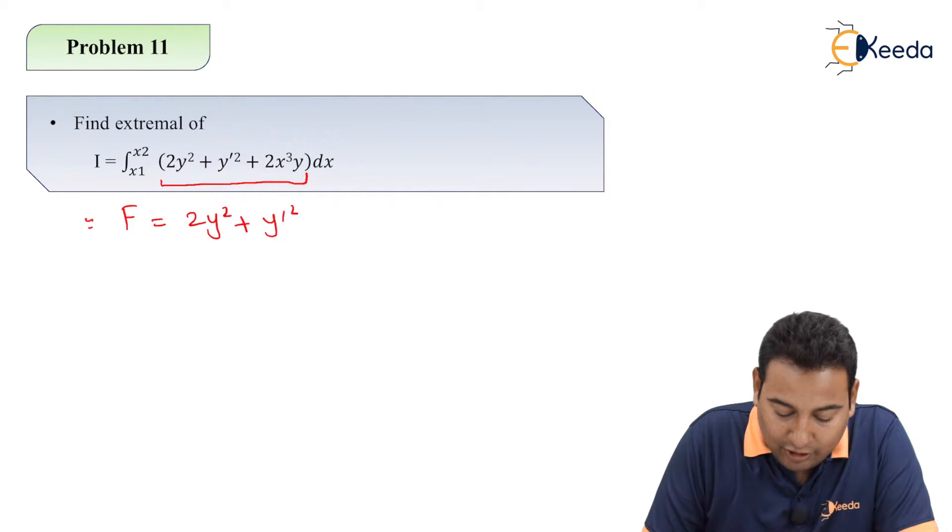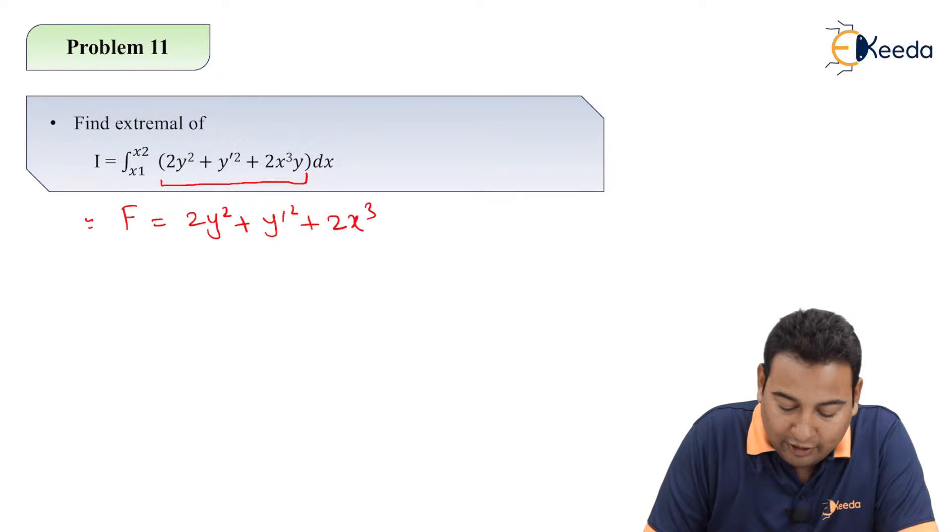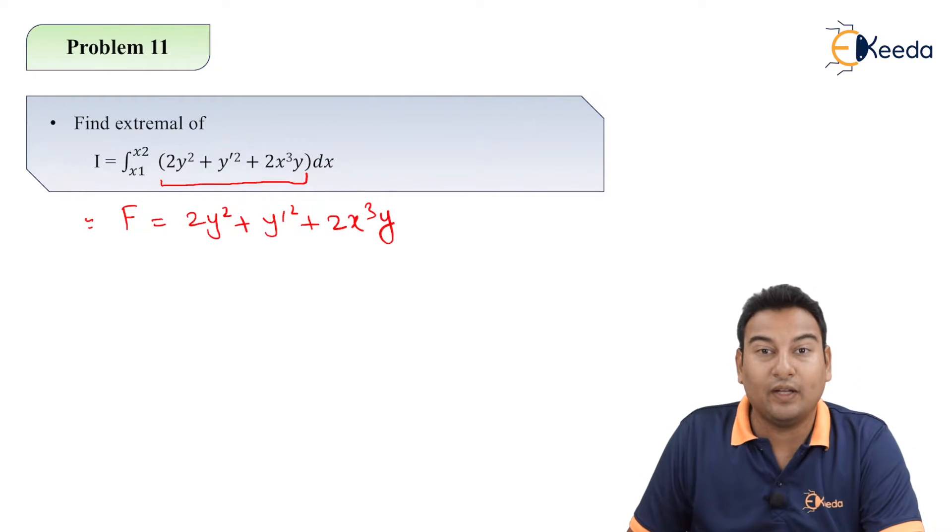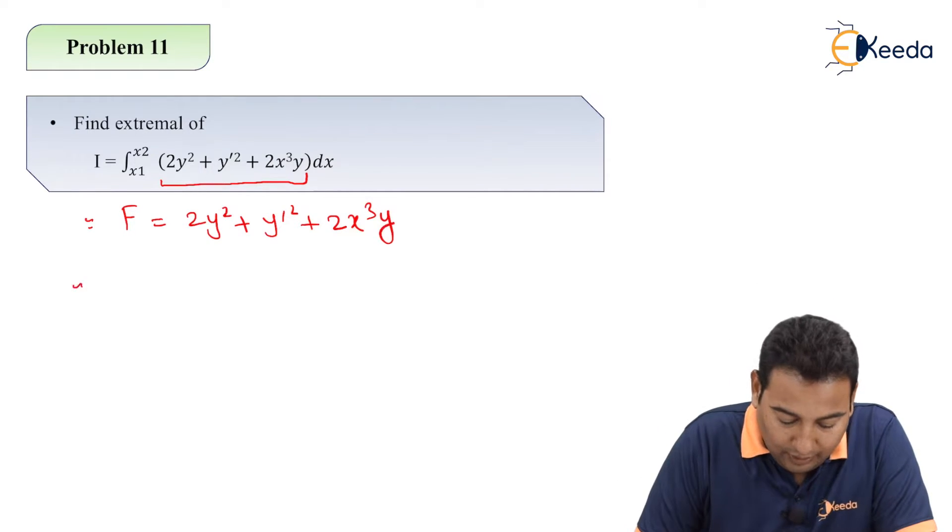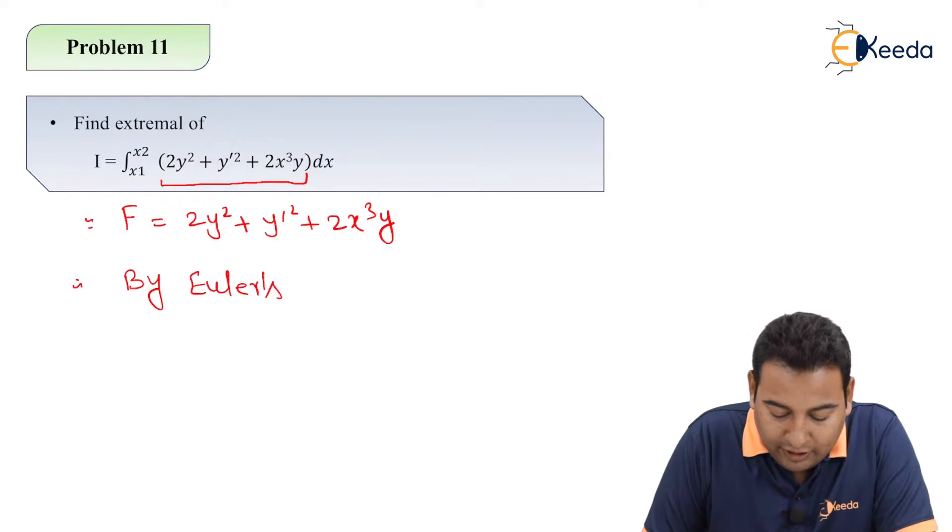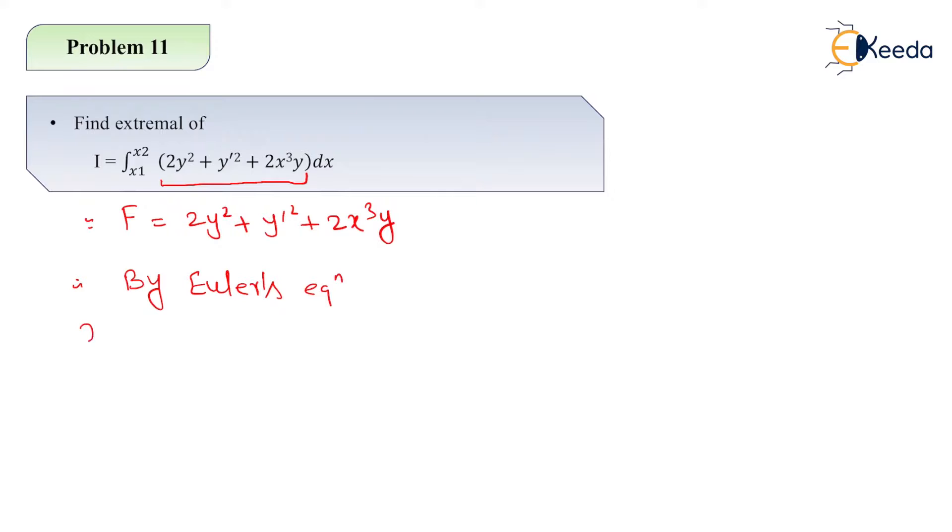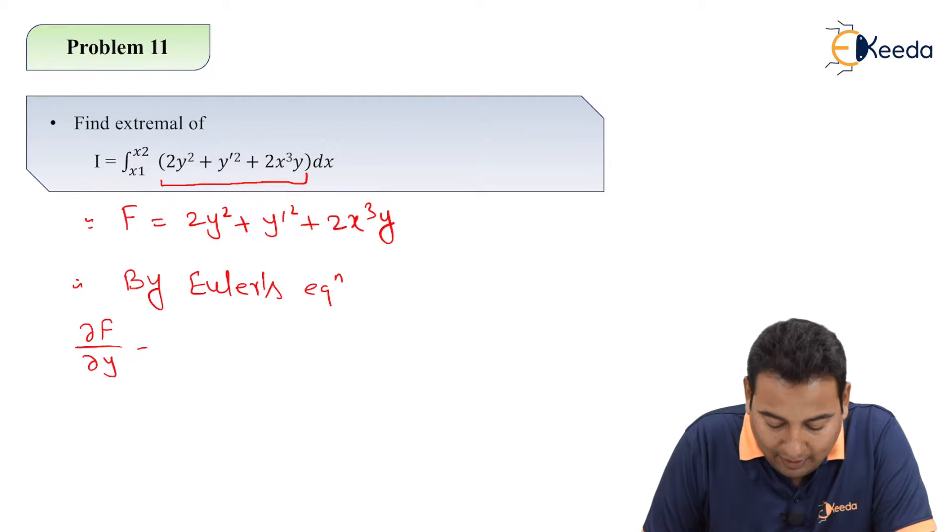If you see this functional, we do have y, x, and y dash all. Therefore by Euler's equation, ∂f/∂y minus d/dx of ∂f/∂y' equal to 0.